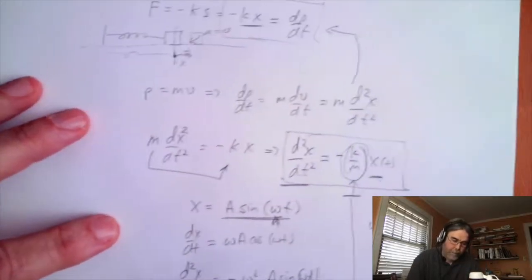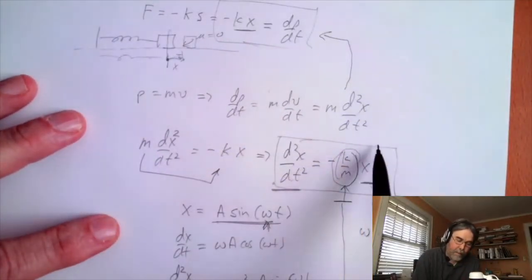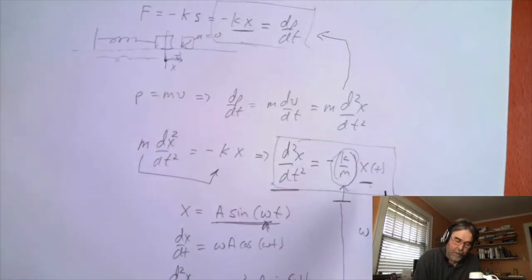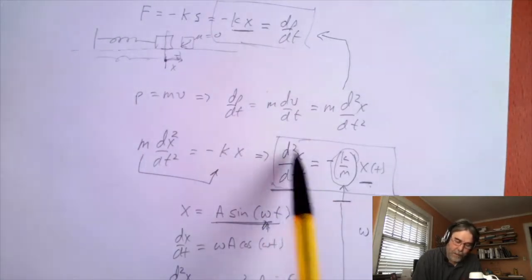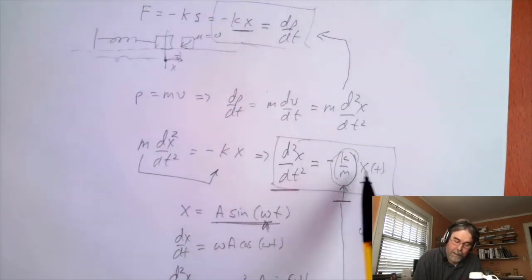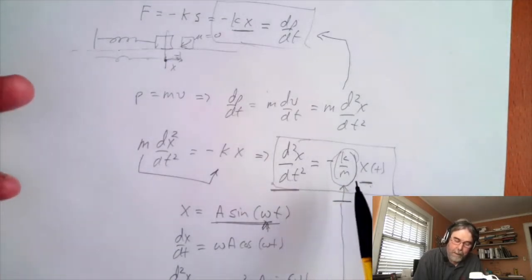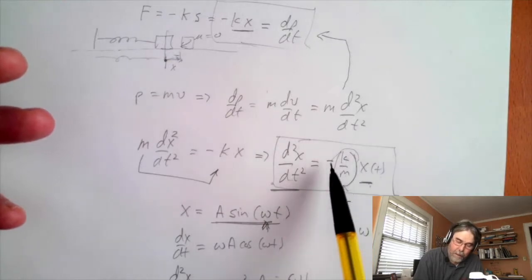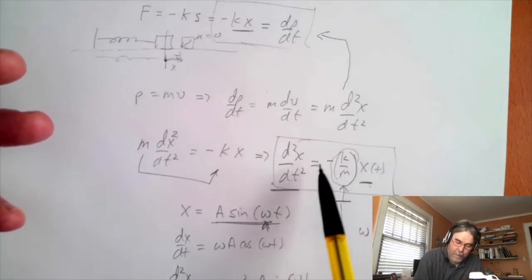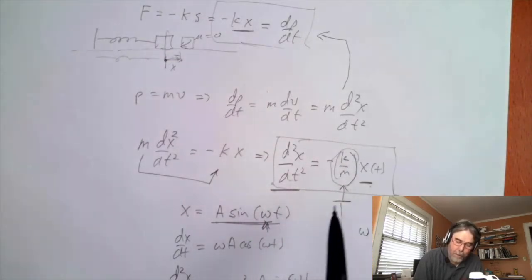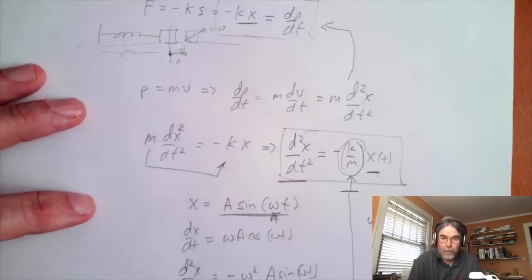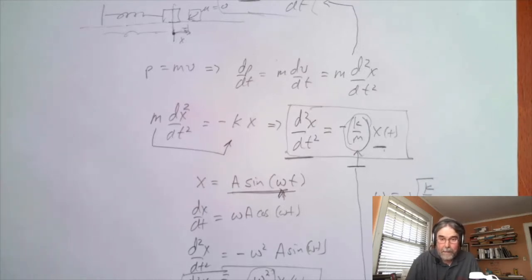What I want to point out is that this same relationship can show up in many different circumstances where the second derivative of a position-like variable equals minus a constant times that position-like variable. You can immediately write down that the coefficient of the position-like variable has to be ω². So let's go look at the magnetic dipole in a magnetic field.